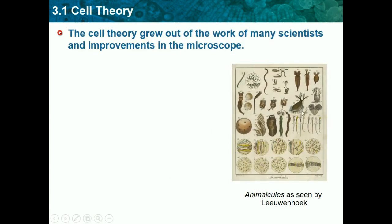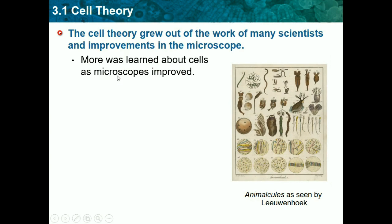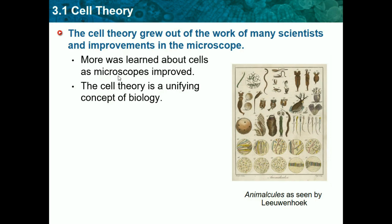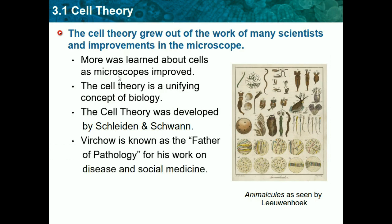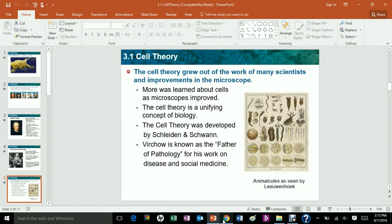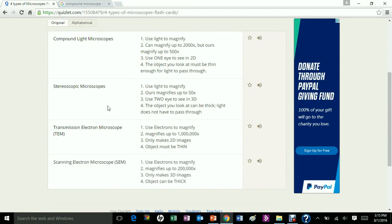The cell theory grew out of the work of many scientists and improvements in the microscope — more was learned about the cell as the microscope improved. The cell theory is a unifying concept of biology. Now, talking about microscopes, we need to know a few types. A compound light microscope uses light to magnify. Some can magnify up to 2,000 times, but most only go up to 400.